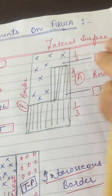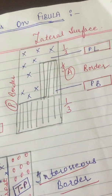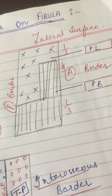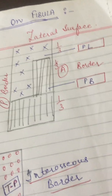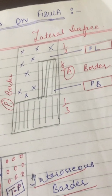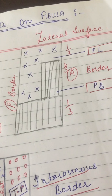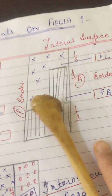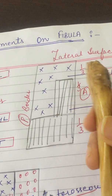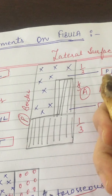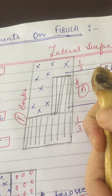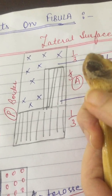Similarly, the posterior border gives attachment to the posterior intermuscular septum, and the interosseous border gives attachment to the interosseous membrane. There is also a triangular area above the medial surface of the lateral malleolus, and this triangular area gives attachment to the interosseous tibiofibular ligament.